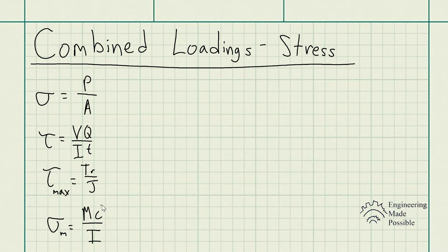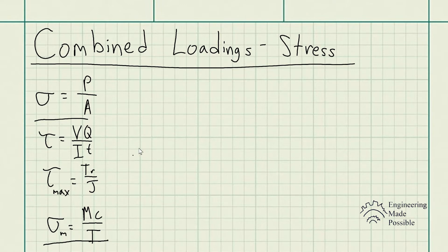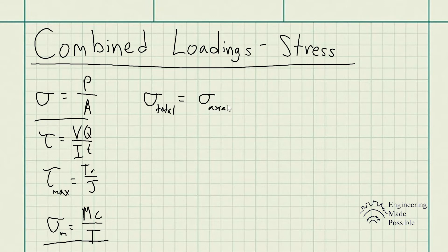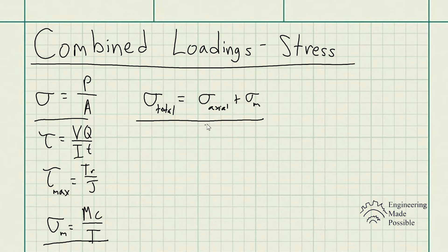When dealing with multiple loading types, you utilize superposition. For example, if an object experiences both an axial load and a moment, you have not just the axial stress but also the bending stress. To determine tensile or compressive stresses, the total stress is simply a linear combination of the two — axial stress plus bending stress. Keep in mind, you also have compressive stress when dealing with a moment. This is superposition, and it works similarly for shear stresses.